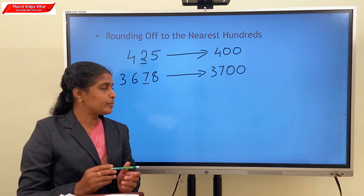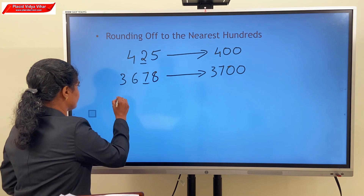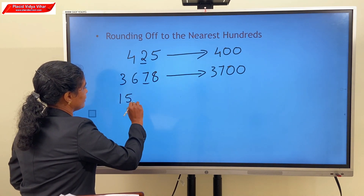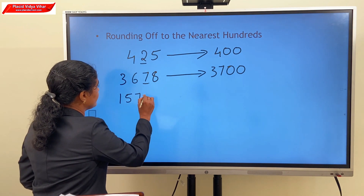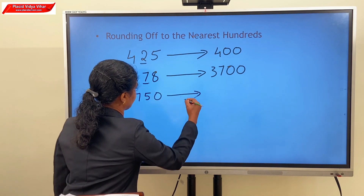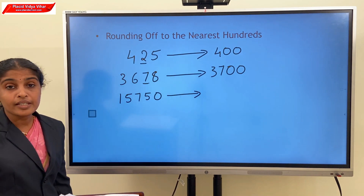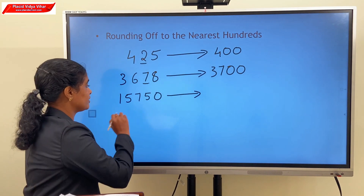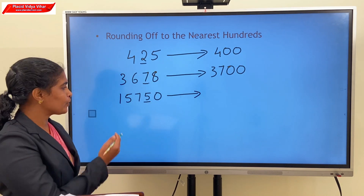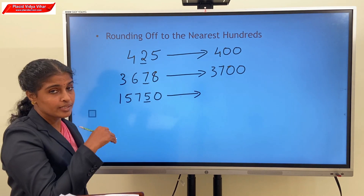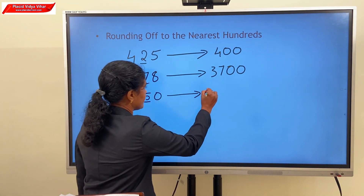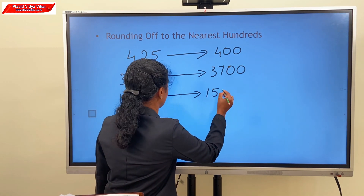Consider another example: 15,750. Here the tens digit is 5. So we round off to the next higher multiple of 100. Our answer is 15,800.